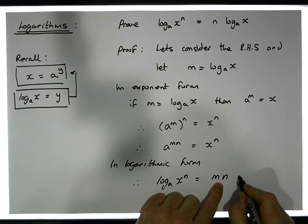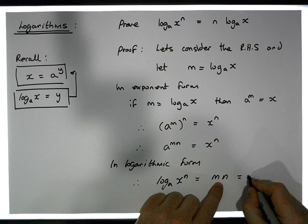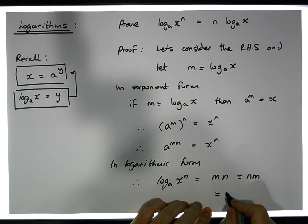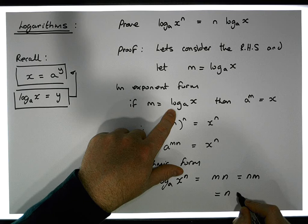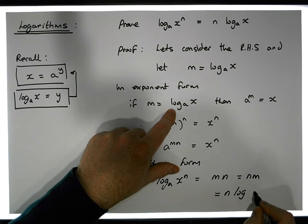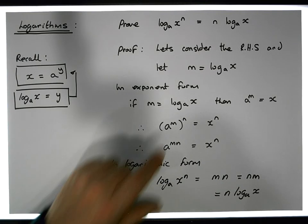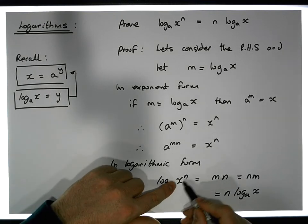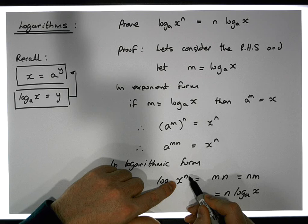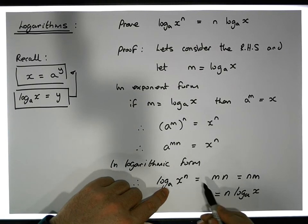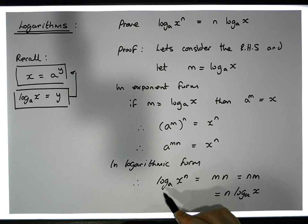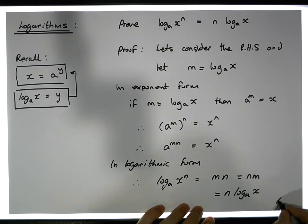Now mn is the same as n times m, and m is the log of x to the base a. So we have now shown that the log of a power function — x to the power of n — to some base a, is the same as the exponent n times the log of x to the base a.